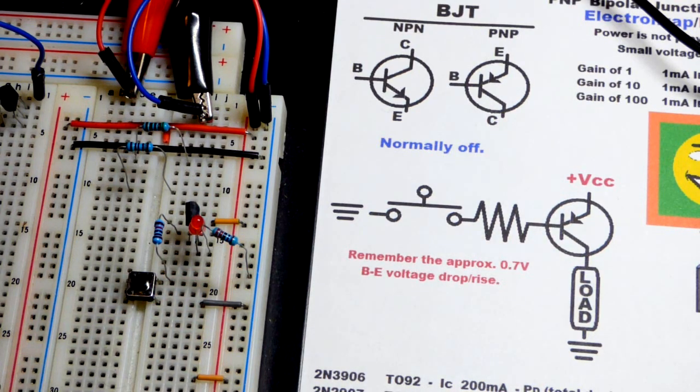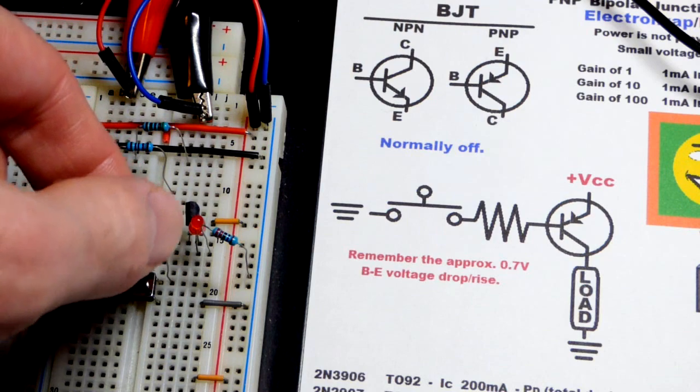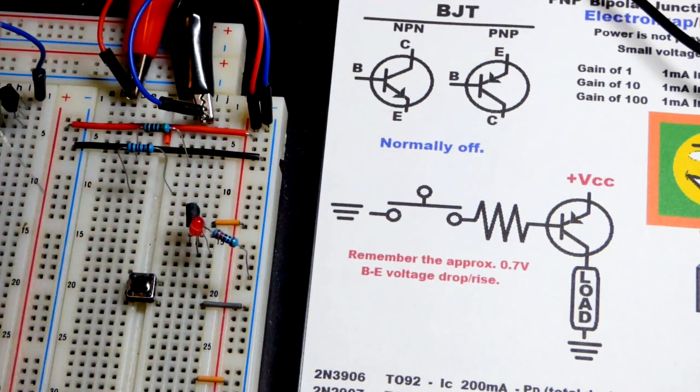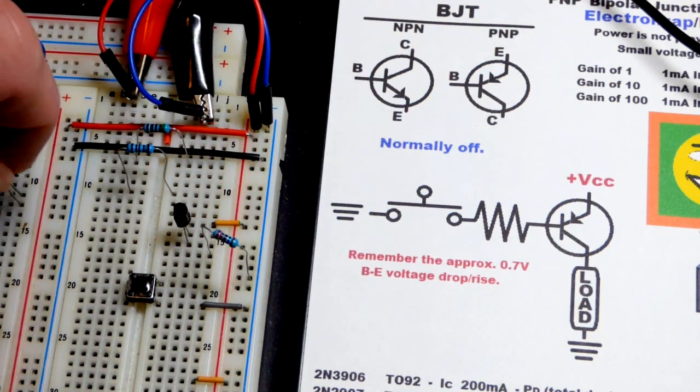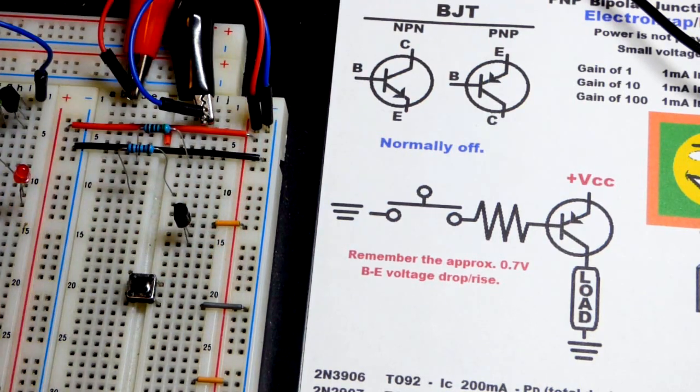And for a switch, you want to go into saturation. We covered that in the last video, and we're going to kind of cover it again, but when it comes to the PNP transistor. I'm going to take this apart really quick and we will build it up step by step.